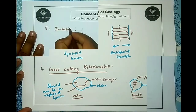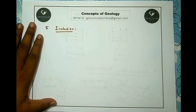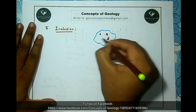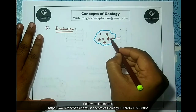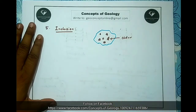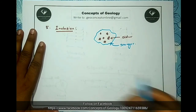The next feature is inclusions. The phase occurring as an inclusion within a grain is older. For example, early-formed oxides are often found as inclusions within late-formed silicates. So if we have a silicate grain with oxide inclusions inside it, clearly the oxides are older and the silicate is younger. The logic is: the included phase is always the older one.